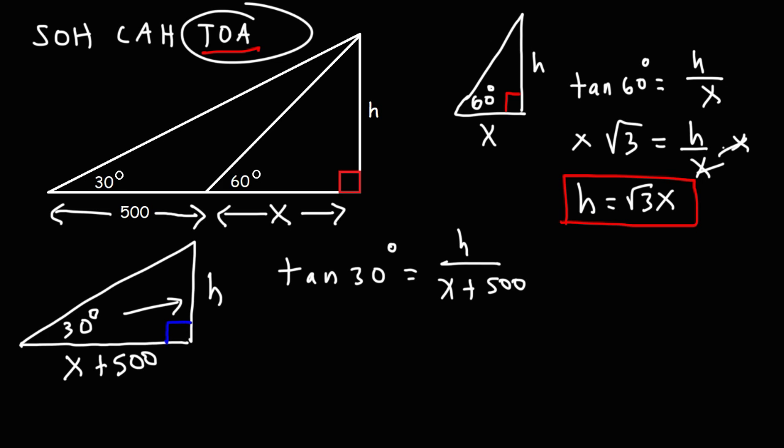Now what is tangent of 30? I should have kept that other triangle. But let's draw it again. Our 30, 60, 90 triangle. This is 1 root 3 and this is 2. Tan 30, that's equal to the opposite side, divided by the adjacent.